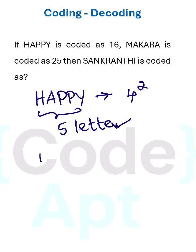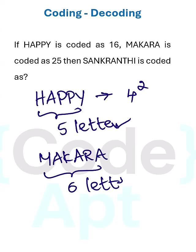Similarly, if you check MACRA, it has 6 letters and the code is 25, which is 5 squared. So following the same logic for Sankranti, Sankranti has 10 letters. The answer must be 9 squared, which is 81.